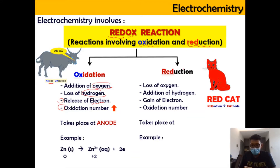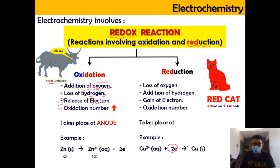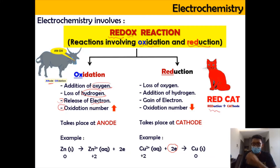For reduction, it is the reverse of oxidation. Reduction involves the gaining of electrons. For example, Cu²⁺ gains 2 electrons to form copper solid. The oxidation number for the reduction process gets reduced from +2 to 0. Reduction happens at cathode. You can remember this as 'Red Cat' — reduction happens at cathode.